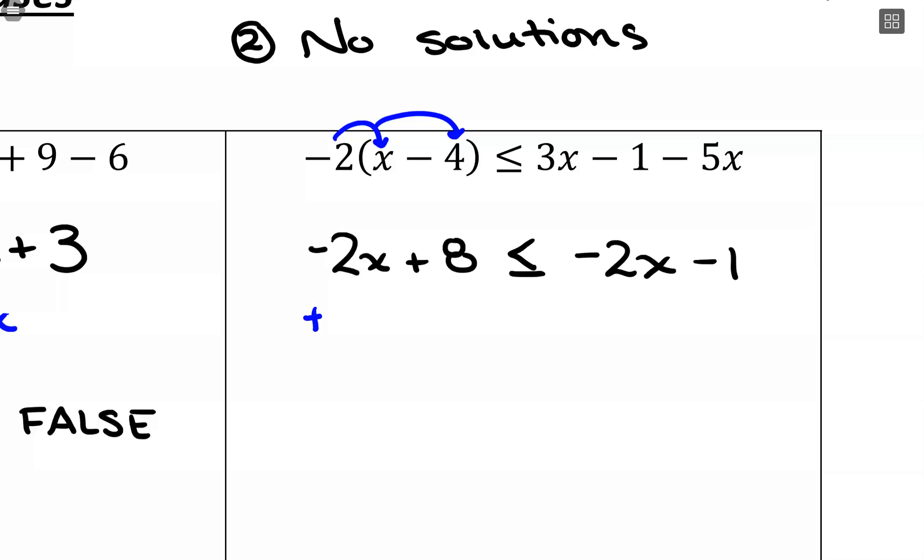I'm going to add 2x to both sides. And with that, my variables cancel out, so I don't have any variables left. And all I have is the comparison of two numbers.